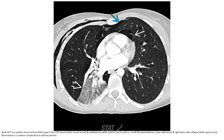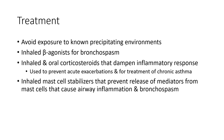This is a contrast CT in the same patient showing extraluminal air in the soft tissue and the mediastinum, as well as a small pneumothorax and subcutaneous emphysema. Barotrauma is a common complication in asthma patients.